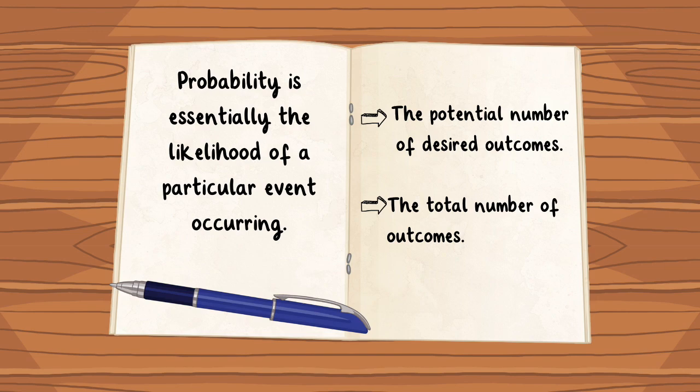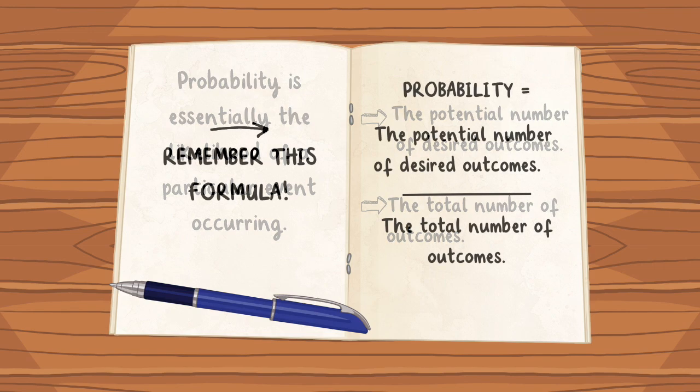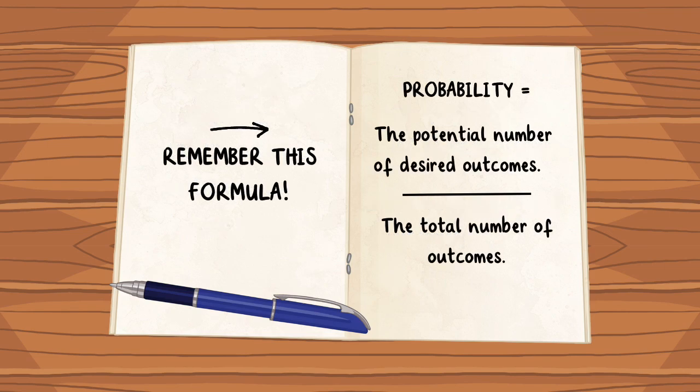Once you know these two factors, you can calculate the probability of a specific outcome using this formula. The probability equals potential number of desired outcomes over the total number of outcomes.